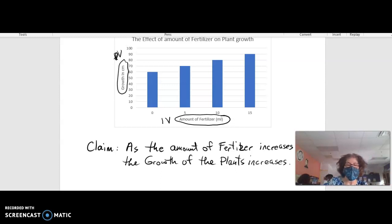So that's how you write a claim. That's the first step, and it's probably the easiest step. The next thing that you do is you write something called evidence. So with evidence, now that we've written what's going on on the graph in simple terms, that as the more fertilizer, the more the plants grow,